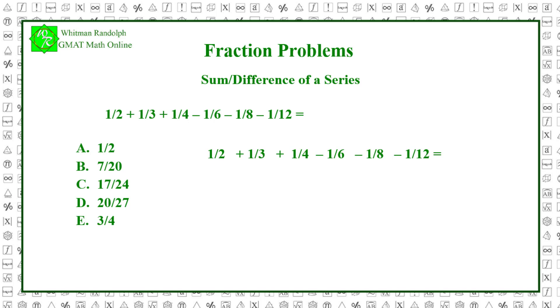1 half plus 1 third plus 1 fourth minus 1 sixth minus 1 eighth minus 1 twelfth equals 12 twenty-fourths plus 8 twenty-fourths plus 6 twenty-fourths minus 4 twenty-fourths minus 3 twenty-fourths minus 2 twenty-fourths, and that equals 17 twenty-fourths. So the correct answer is C.